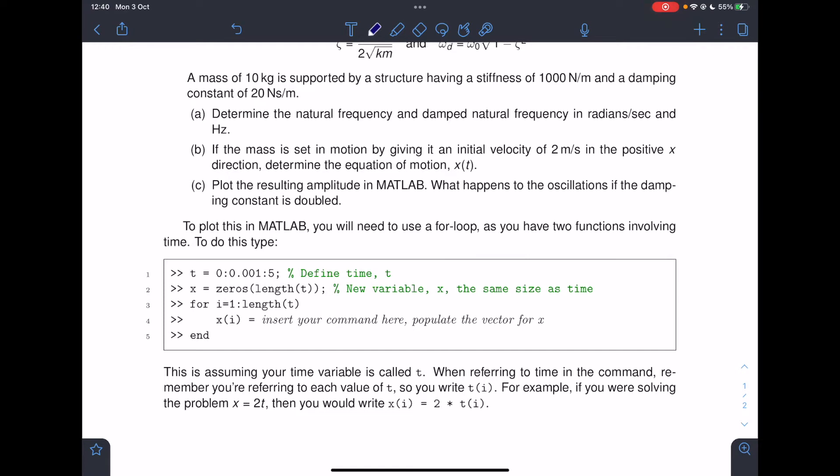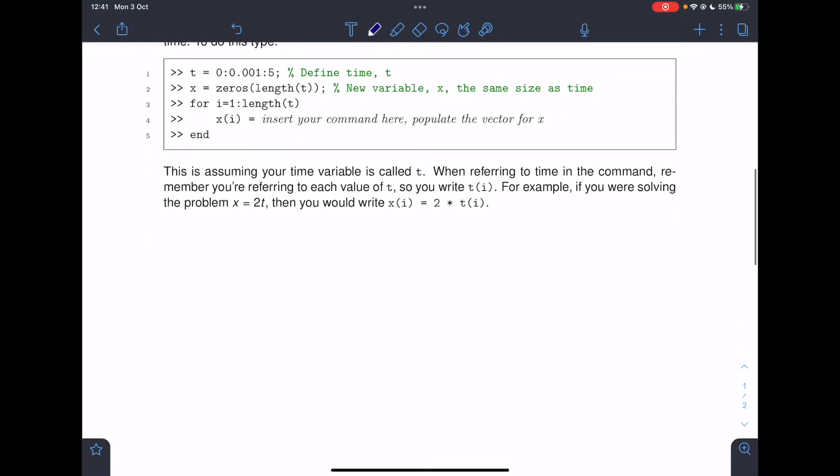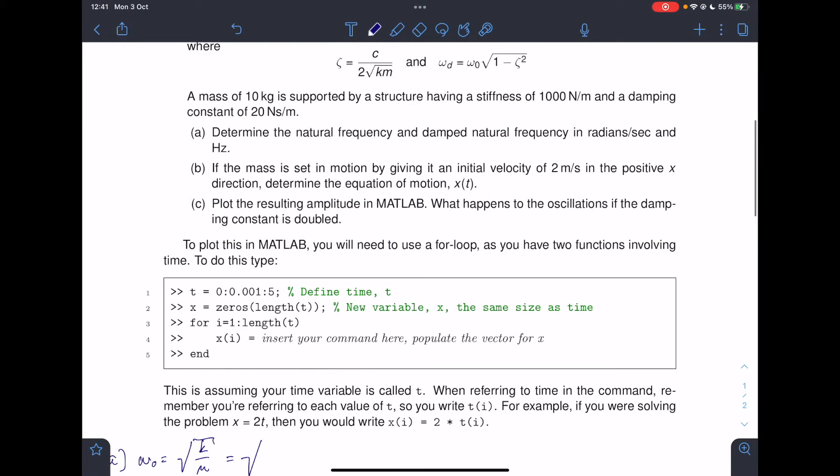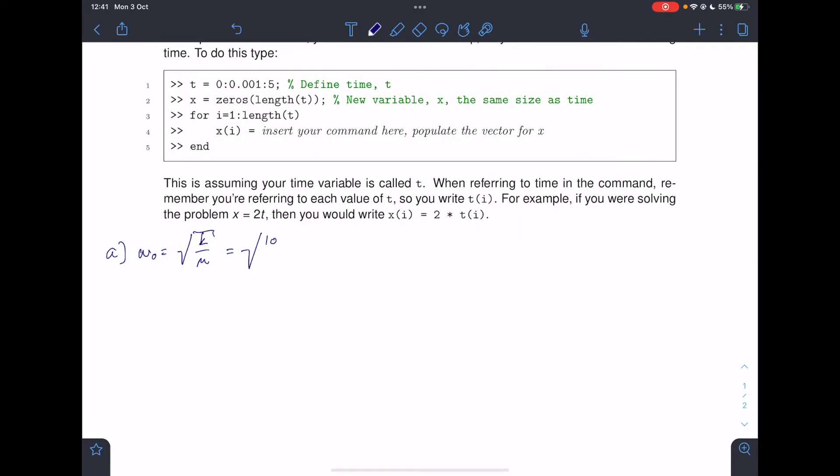So for this problem, we want to work out part A: natural frequency and damped natural frequency in radians per second and hertz. For part A, we know that omega naught is the square root of k divided by m. So that's the square root of 100 divided by 1,010 kilograms, which is going to be 10 radians per second.